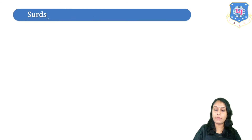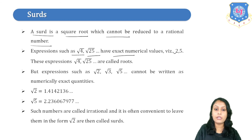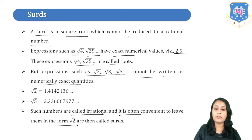Now let's move to the next topic: Surds. A surd is a square root which cannot be reduced to a rational number. Expressions such as √4 and √25 have exact numerical values, 2 and 5, so these are just roots. But expressions like √2, √3, √5 cannot be written as exact numerical quantities — for example, √2 is 1.414… and √5 is 2.23… Such numbers are called irrational numbers, and it is often convenient to leave them in the form √2. These terms are known as surds.